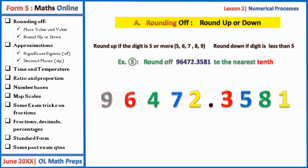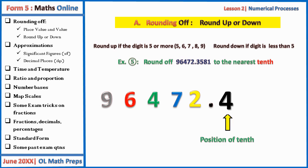Example five: round this number to the nearest tenth. Tenth means the first position after the decimal marker. The position here is three, and the five after it will affect it, so this three now becomes four.